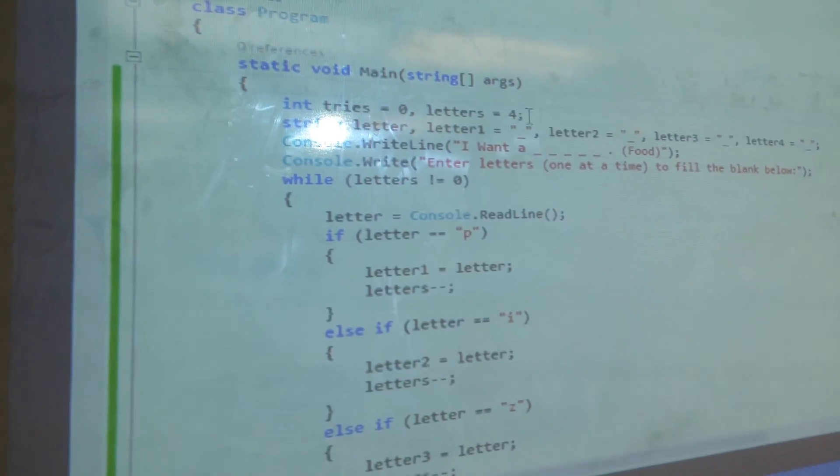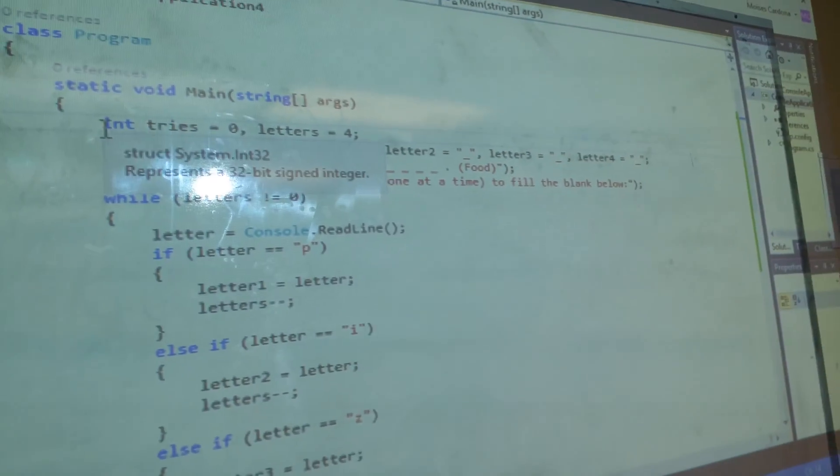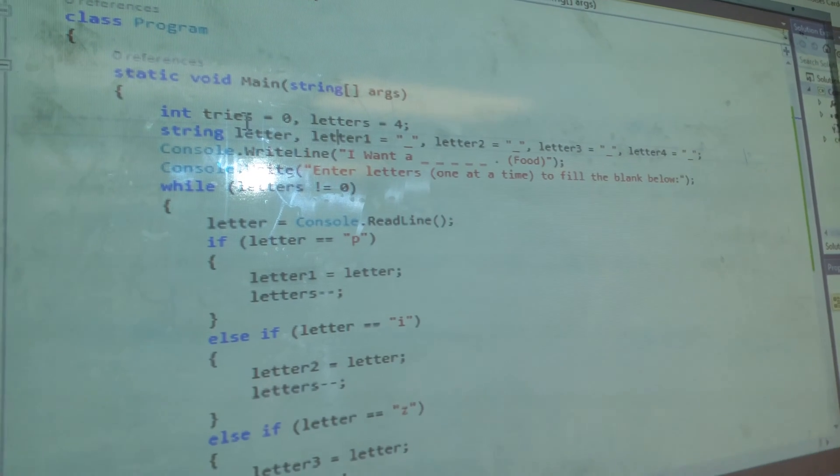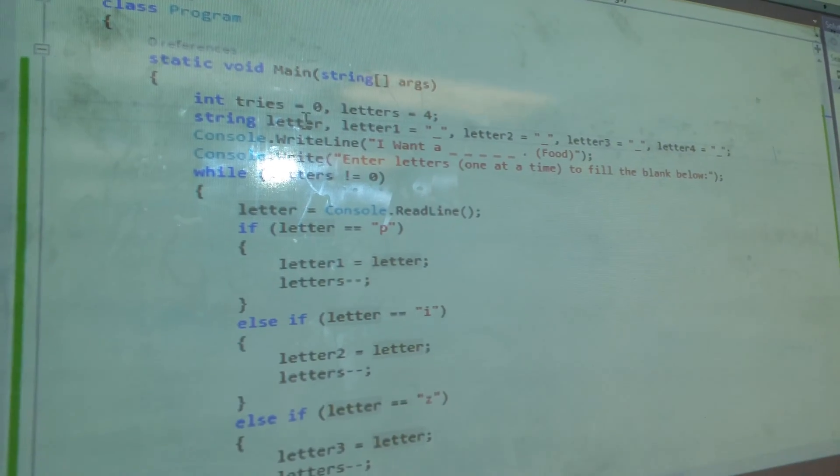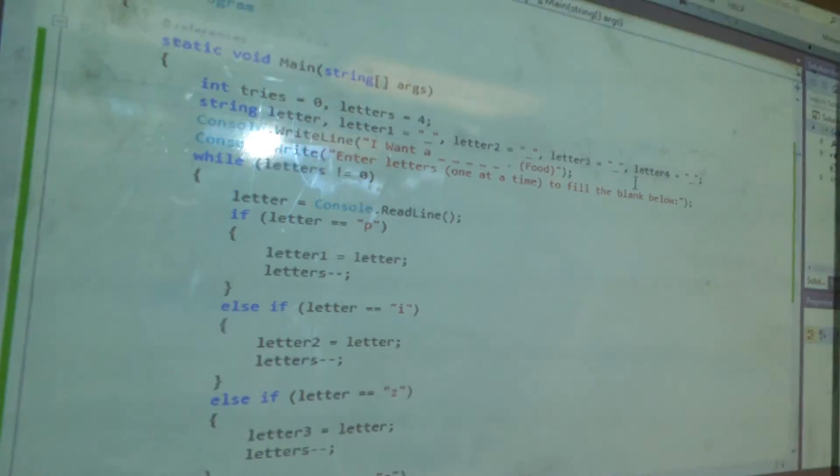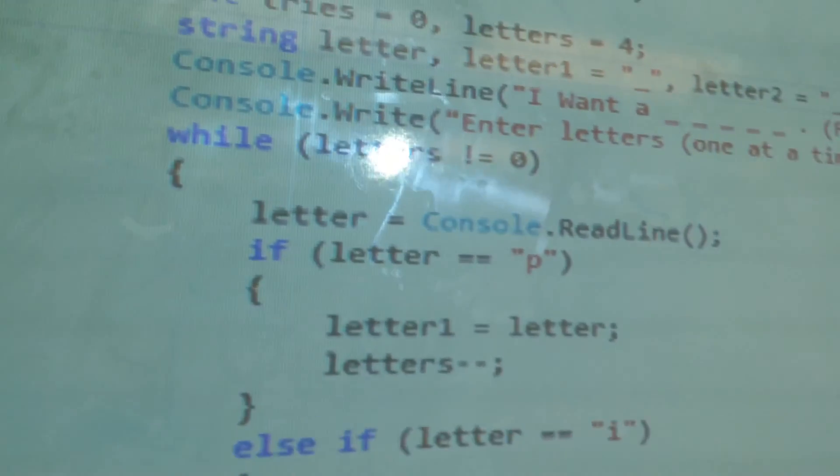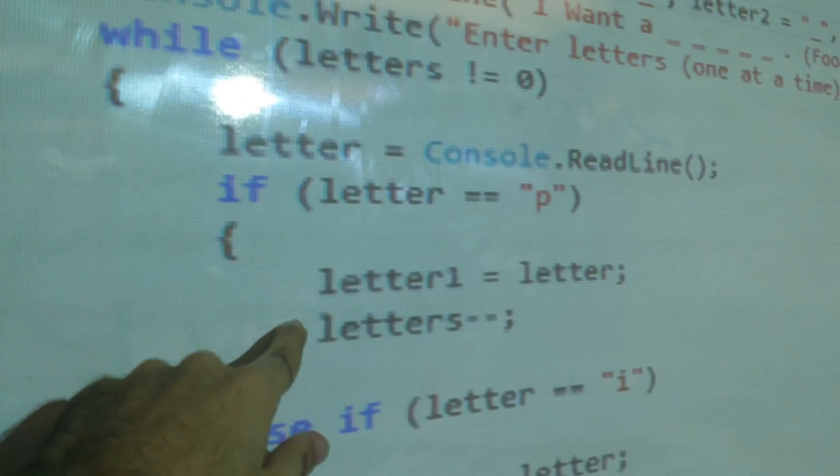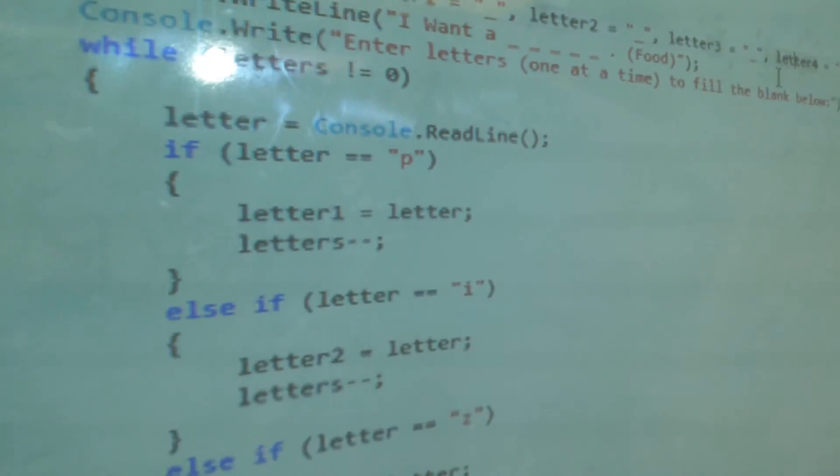The code starts with the variables, integer variables, it then has the string variables. The letter is what the user is going to input. Letter one to letter four are the blanks. So when a user enters for example letter P, letter one will turn into P. That's how the program can show the progress of the letters in the screen.